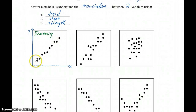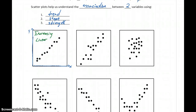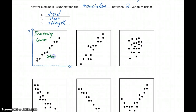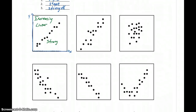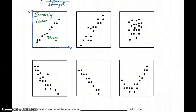The shape in this case is approximately linear, because our points are following a straight line pattern more or less. In terms of strength, we want to talk about how closely those points fit to the shape we identified. Here it's a linear pattern, and the strength of that association seems to be very strong, because the points closely follow that straight line pattern. So that's an example of an increasing trend.